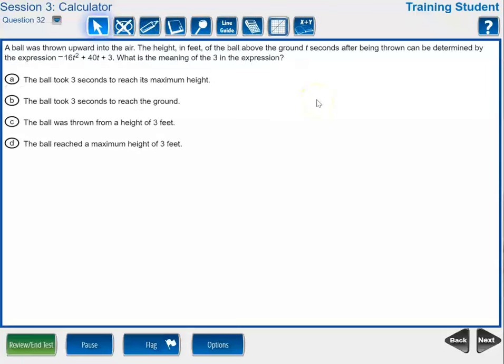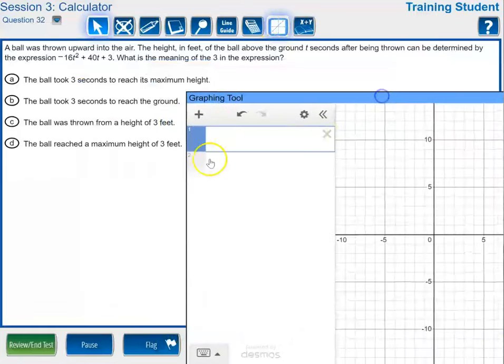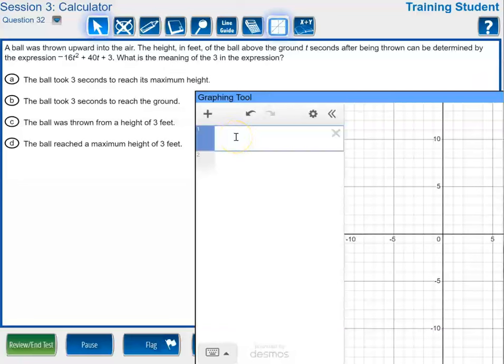The next item we're looking at is item number 32. A ball was thrown upward and we are given an expression with a T in it and we're asked what the number three in that expression represents. You wouldn't necessarily think this is a calculator item or that the calculator would help too much but really it does because I can create a function of T and I can graph it and see if any of these statements are true or not and that will narrow down my choices. So we'll go ahead and call this a function of T. I'm going to use H of T but you could use F of T or any name you want for the function and then I'm going to type in this expression. If you just type an expression in with a letter other than x it's not going to graph it but if you do type it as a function of that letter, use that letter as your variable, then it will go ahead and graph the function for you.